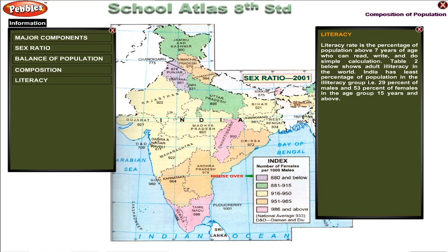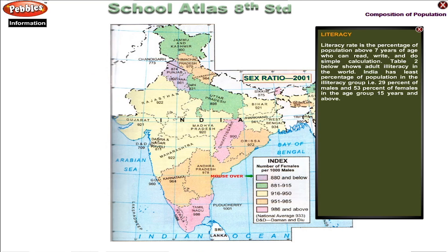Literacy rate is the percentage of population above 7 years of age who can read, write, and do simple calculations. India has a significant percentage in the illiteracy group — 29% of males and 53% of females in the age group of 15 years and above.